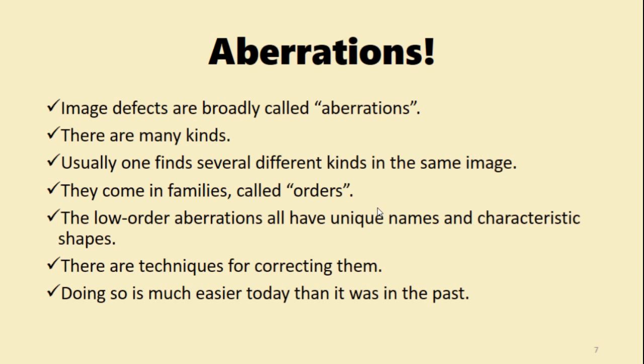Now why is that? Well, because of aberrations. Image defects are broadly called aberrations and there are many kinds. Usually one finds several kinds in the same image. They come in families called orders. Many of them have unique names and characteristic shapes and there are techniques for correcting them. And doing so is much easier today than it was in the past.